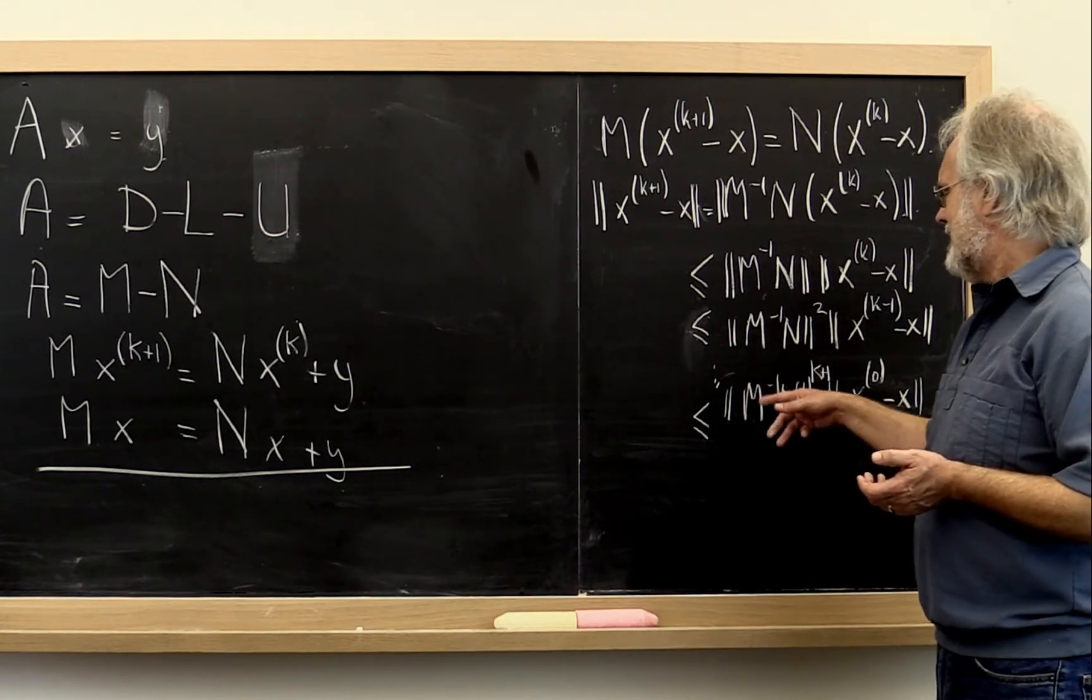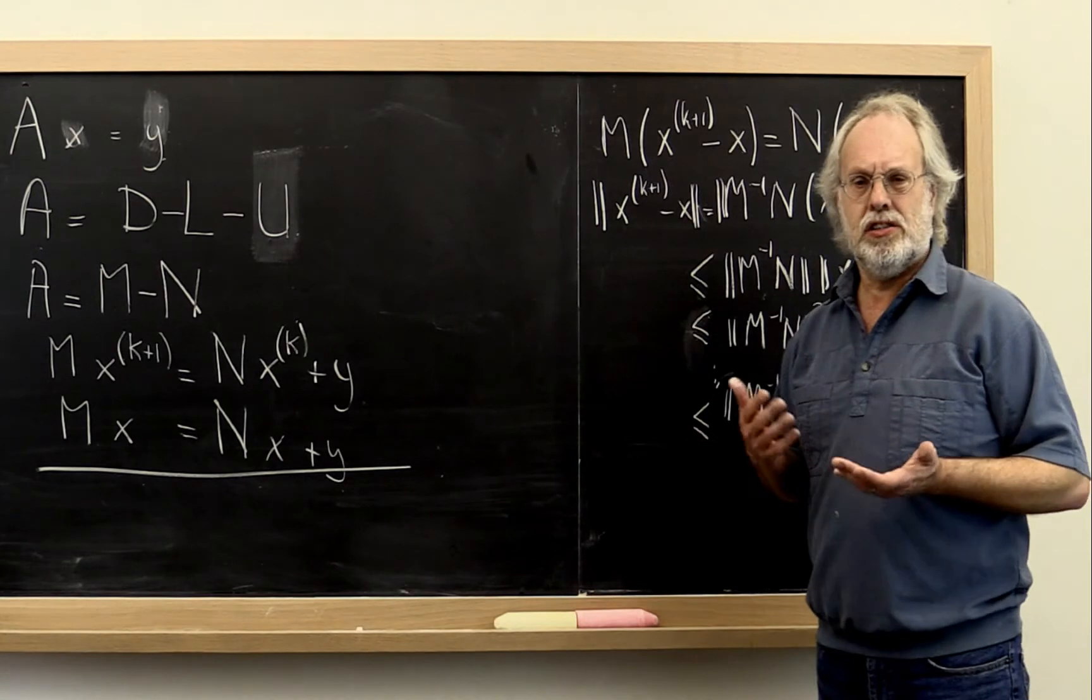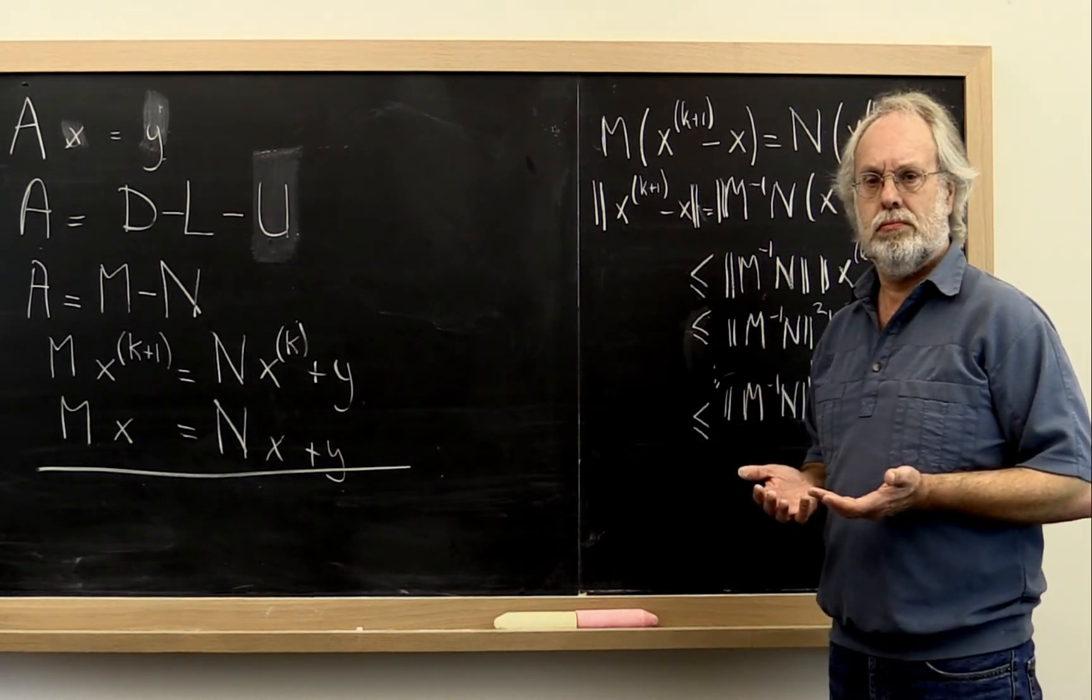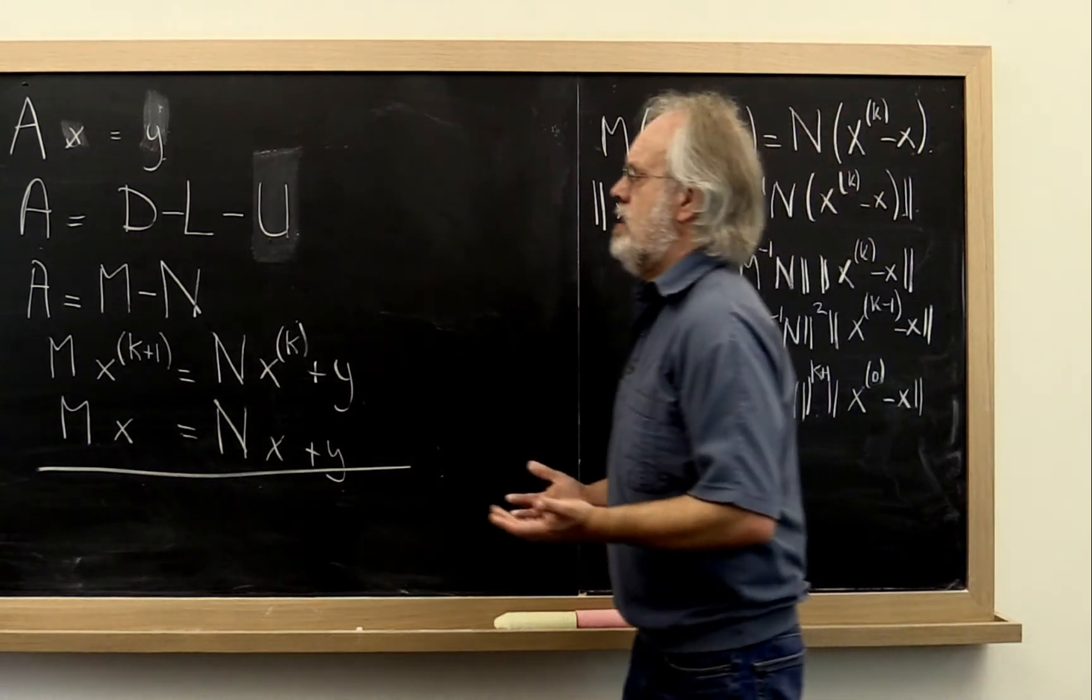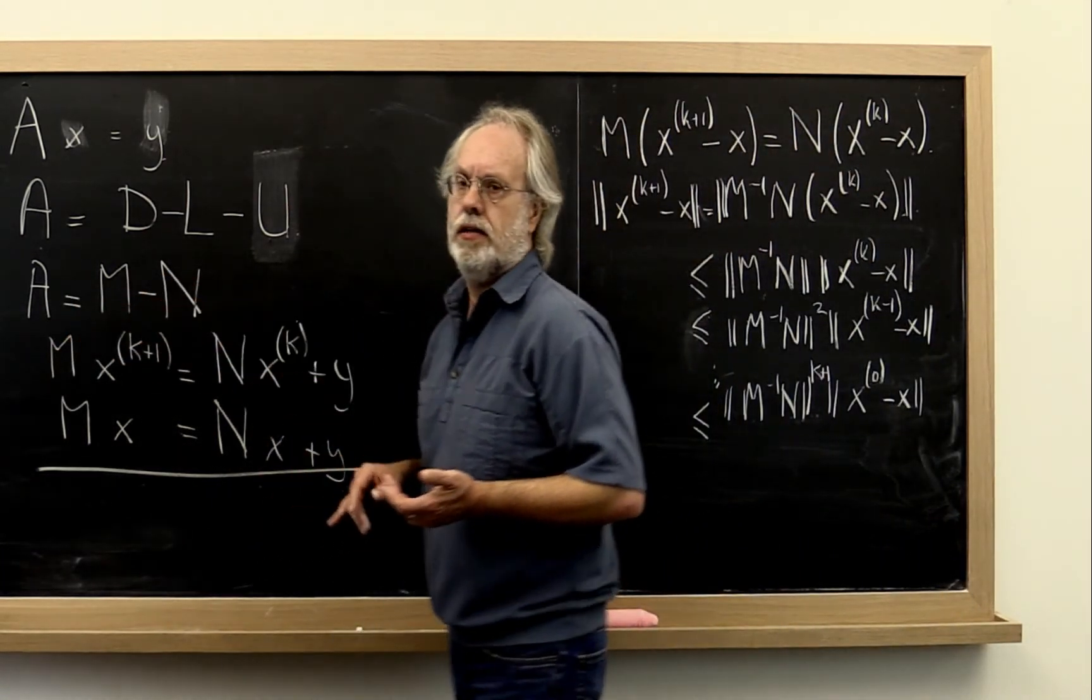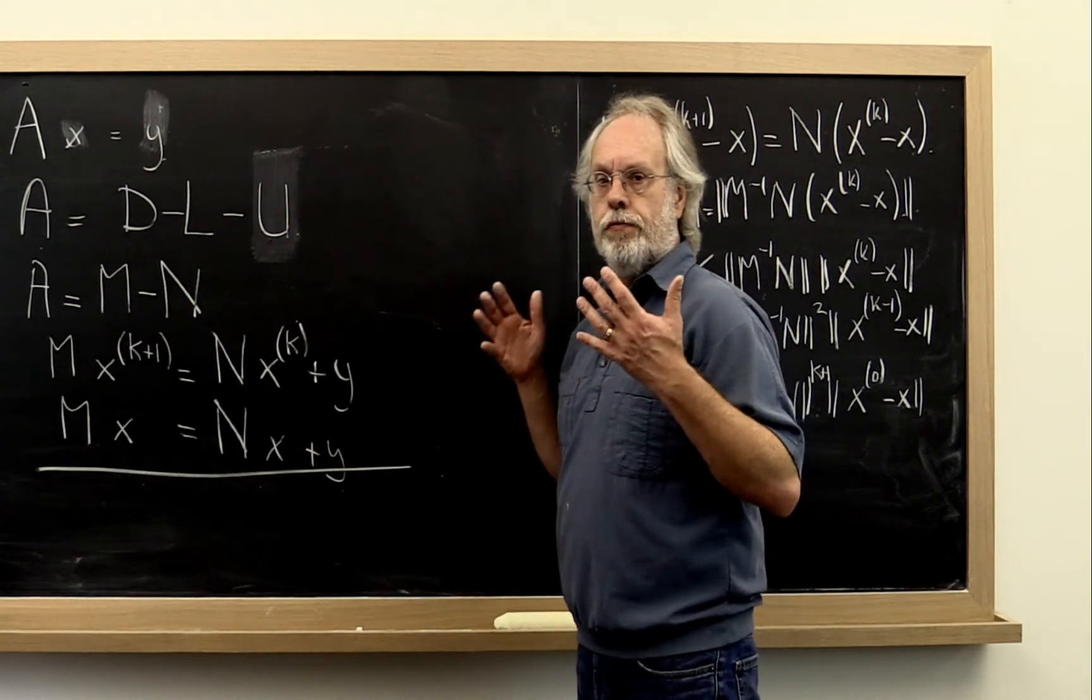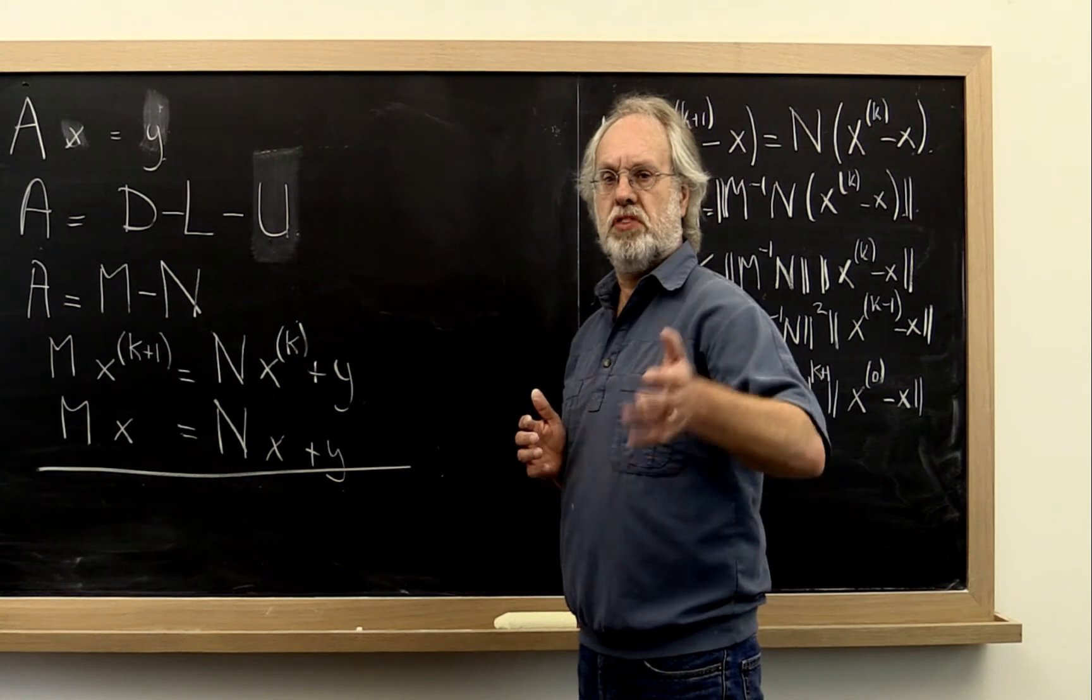Okay. What is the best way of splitting A into M and N such that you converge in the fewest iterations? Think about that.